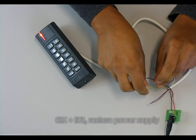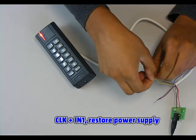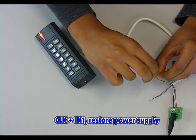The electrical bridge between CLK and IN1 lines has to be done. Once it is made, restore power supply.